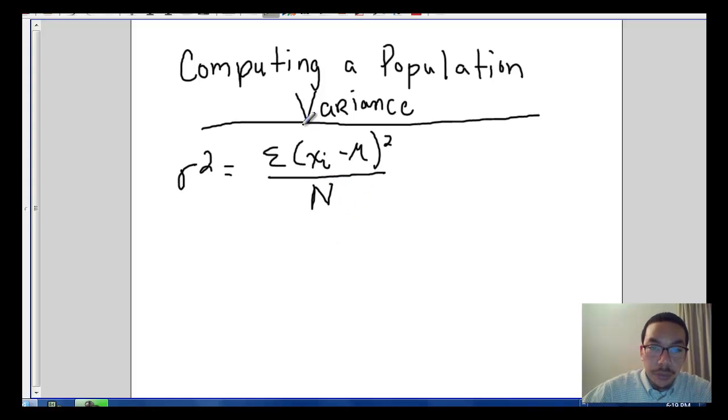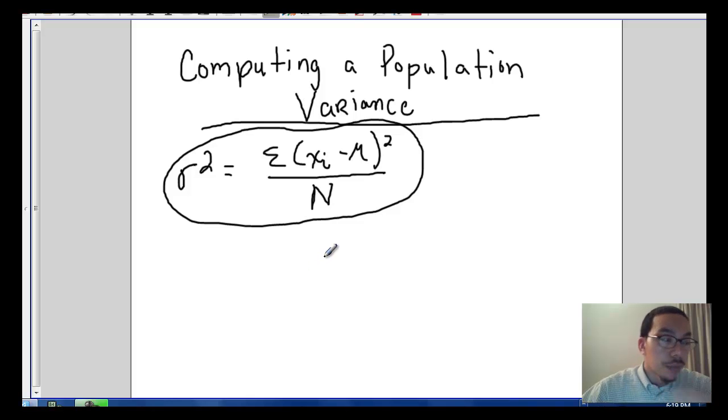So here's our formula for population variance. But then if you can recall we had another formula. This one was the computational formula.